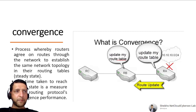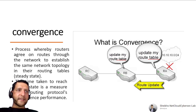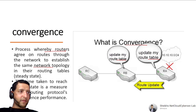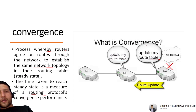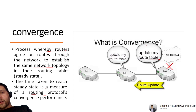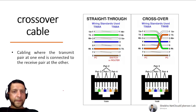Convergence is when all routers in a network agree on routes and establish the same network topology in their routing tables — a steady state. When all routers have the same routing table, they have reached convergence. The time taken to reach this steady state is a measure of a routing protocol's convergence performance. A good routing protocol takes less time to converge.